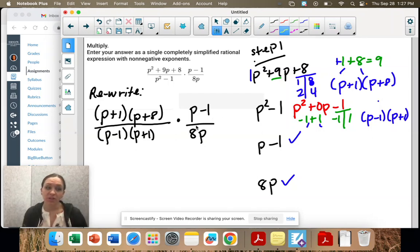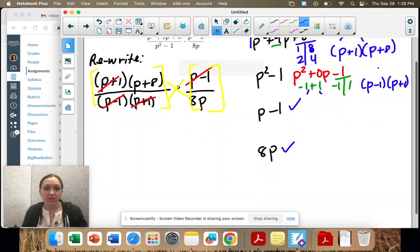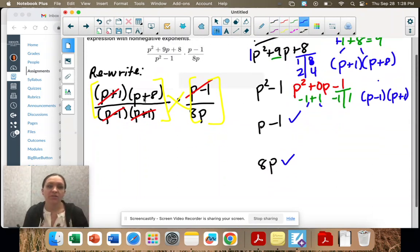Okay, you can multiply straight across, or step 2 is to start crossing stuff out. So I'm looking diagonally, and I see a p minus 1. Done. Now I'm looking numerator to denominator. So I'm looking at this fraction only. Right here, p plus 1. And then when I look at this fraction only, there's nothing left. There's just the 8p. So now we're going to go straight across, top to bottom, and figure out what's left.